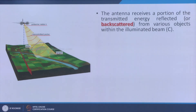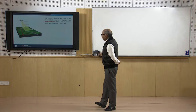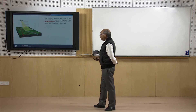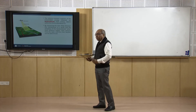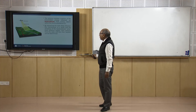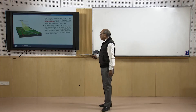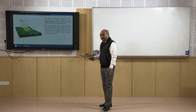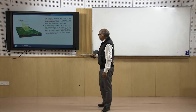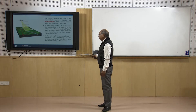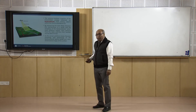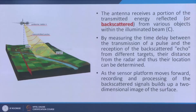The antenna receives a portion of the transmitted energy reflected or backscattered from various objects within the illuminated beam. By measuring the time delay between transmission of the pulse and reception of the backscatter echo from different targets, their distances from the radar and thus their locations can be determined. As the sensor platform moves forward, recording and processing of the backscatter signals builds up a 2-dimensional image of complex numbers of that part of the earth.